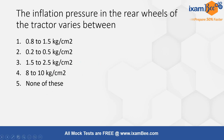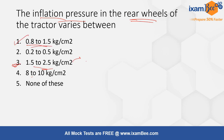The next question is: the inflation pressure in the rear wheels of a tractor varies between — options are 0.8 to 1.5, 0.2 to 0.5, 1.5 to 2.5, 8 to 10, or none of these. The inflation pressure in the rear wheels is 0.8 to 1.5, while in the front wheel it is 1.5 to 2.5. Remember, the inflation pressure in the front wheel is more than the rear wheel.